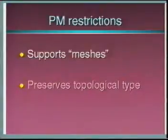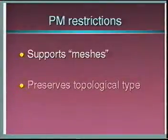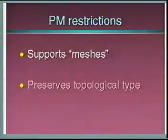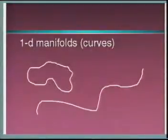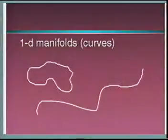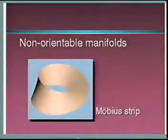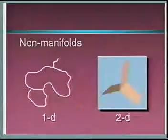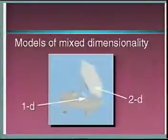However, the progressive mesh framework has two key restrictions. First, it supports only meshes — in other words, orientable two-dimensional manifolds. Models that cannot be represented include one-dimensional manifolds, non-orientable manifolds, non-manifolds, and models of mixed dimensionality.